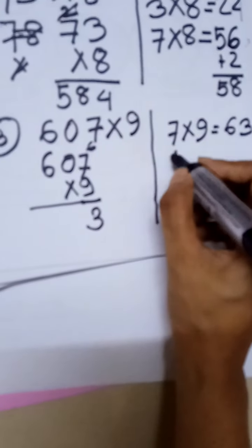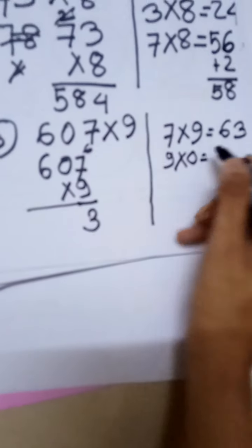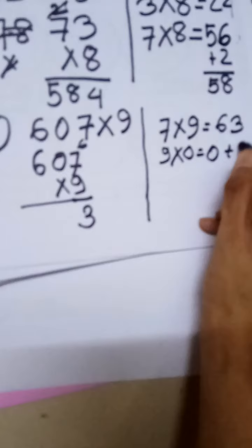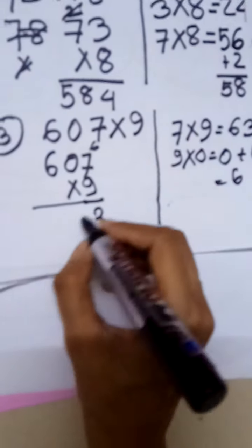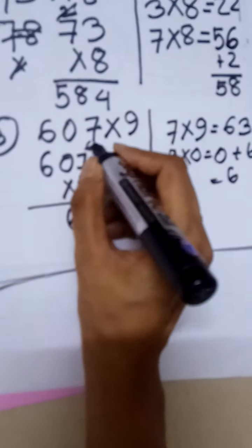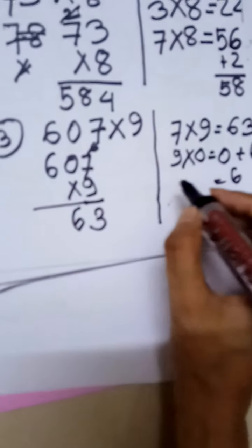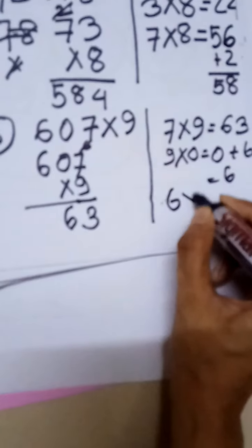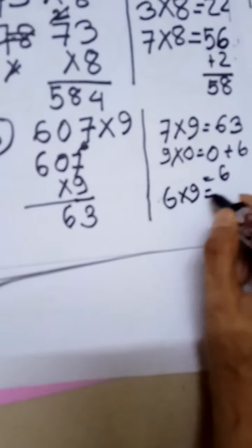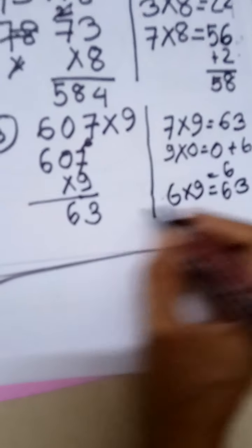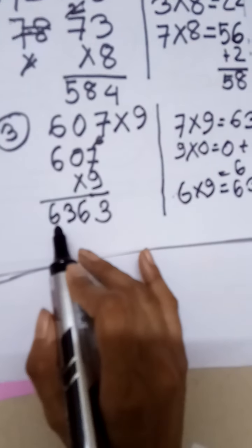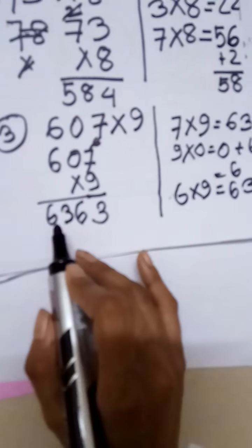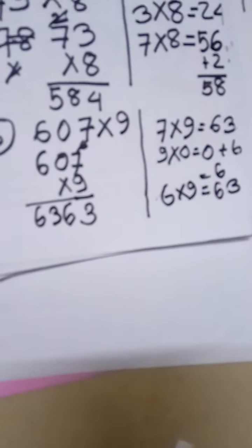We will write 3 here and carry 6. Then 9 times 0 equals 0, plus carrying 6 equals 6. Then 6 times 9 equals 54. We have to write 54 here. The answer is 5,463.